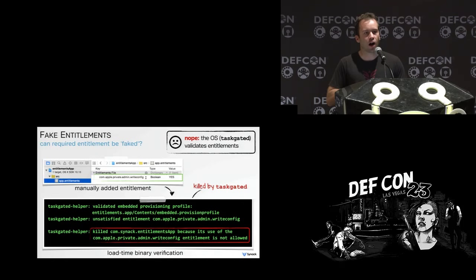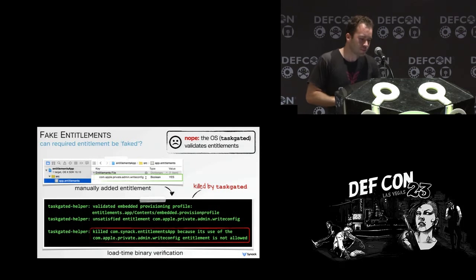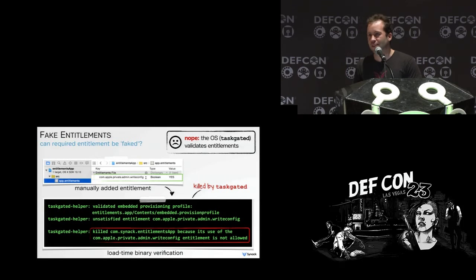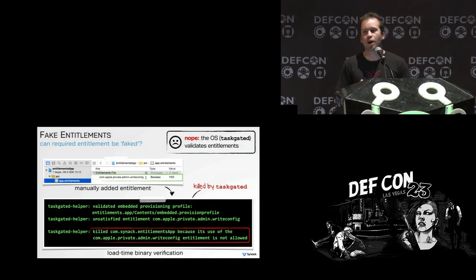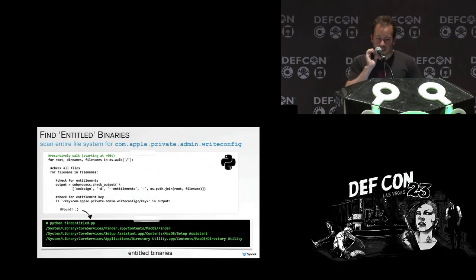First I tried to add the com.apple.private.admin.writeconfig entitlement to my own binary. In Xcode you can specify entitlements, so I tried adding this Apple private entitlement. It let me compile, but when I executed, the OS told me to GTFO — basically said you claim to have this Apple entitlement but I can't verify you. Since it's a private Apple entitlement, it can probably detect that I'm not a verifiable Apple binary. So it can say this is a fake ID — you're not really an Apple binary and therefore can't have this private Apple entitlement.